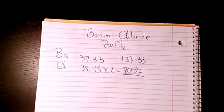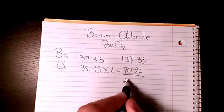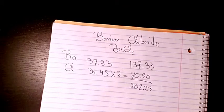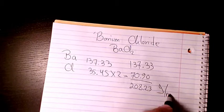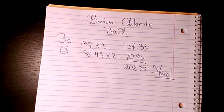If we add these two together, it's going to be 137.33 plus 70.90, which equals 208.23 grams per mole. That's the unit for molar mass. I hope you like this video — please leave me a comment if you have any questions.